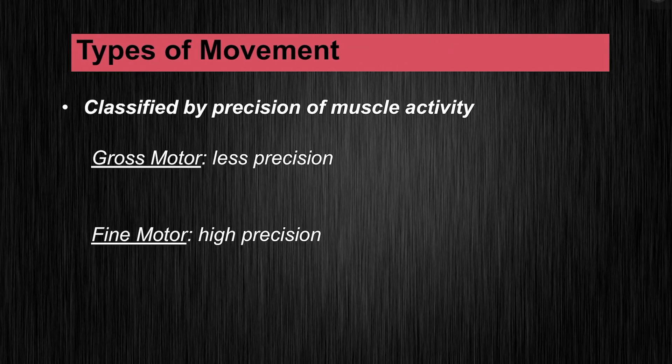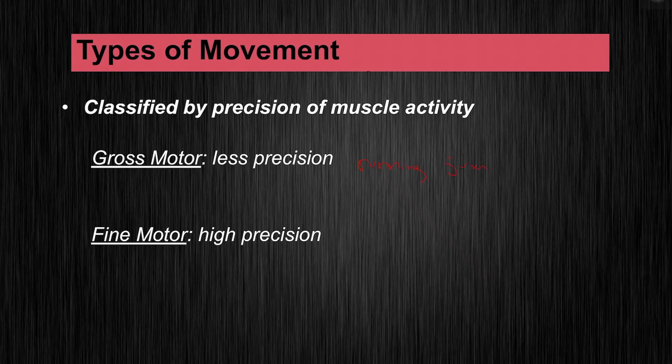We also have gross motor and fine motor skills. Gross motor movement requires less precision and typically requires greater degrees of force — this is what most people think of when they think of athletics, things like running, jumping, and throwing. Fine motor movements require high precision and a smaller relative number of motor units, and those motor units might be connected to fewer muscle fibers as well. These include things like visual eye tracking or playing a musical instrument. In sport, an outfielder in baseball tracking the movement of a fly ball would be fine motor, but as soon as he starts sprinting and diving to catch the ball, that becomes a gross motor movement.